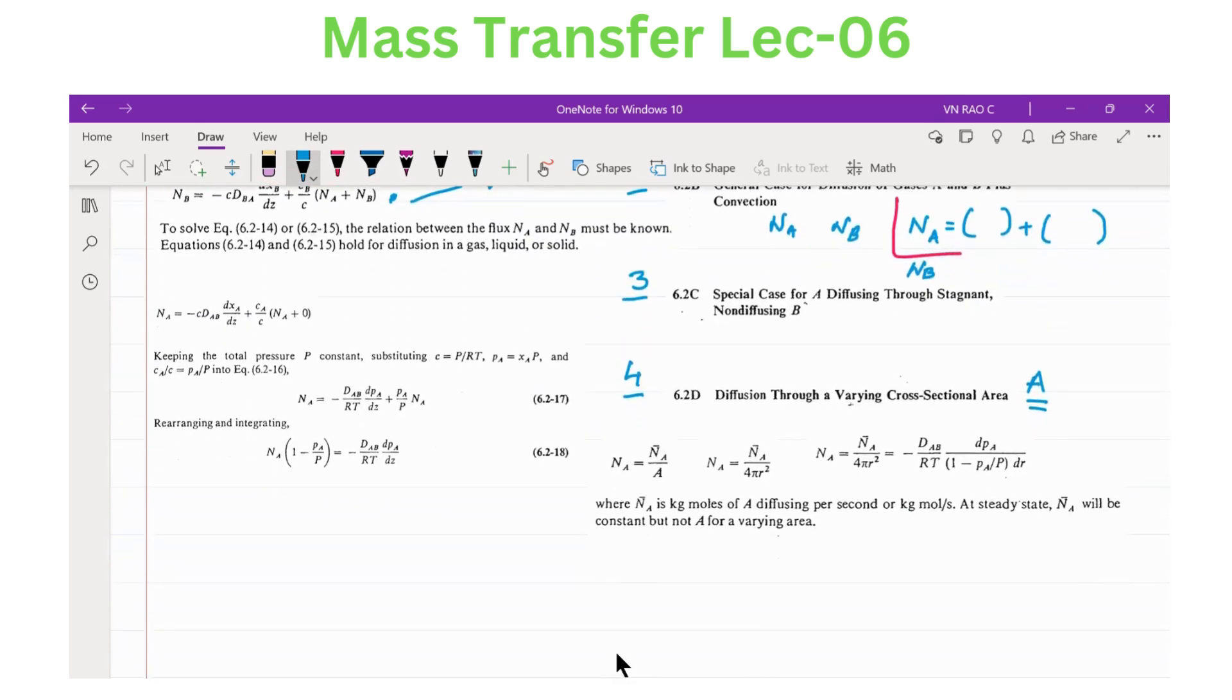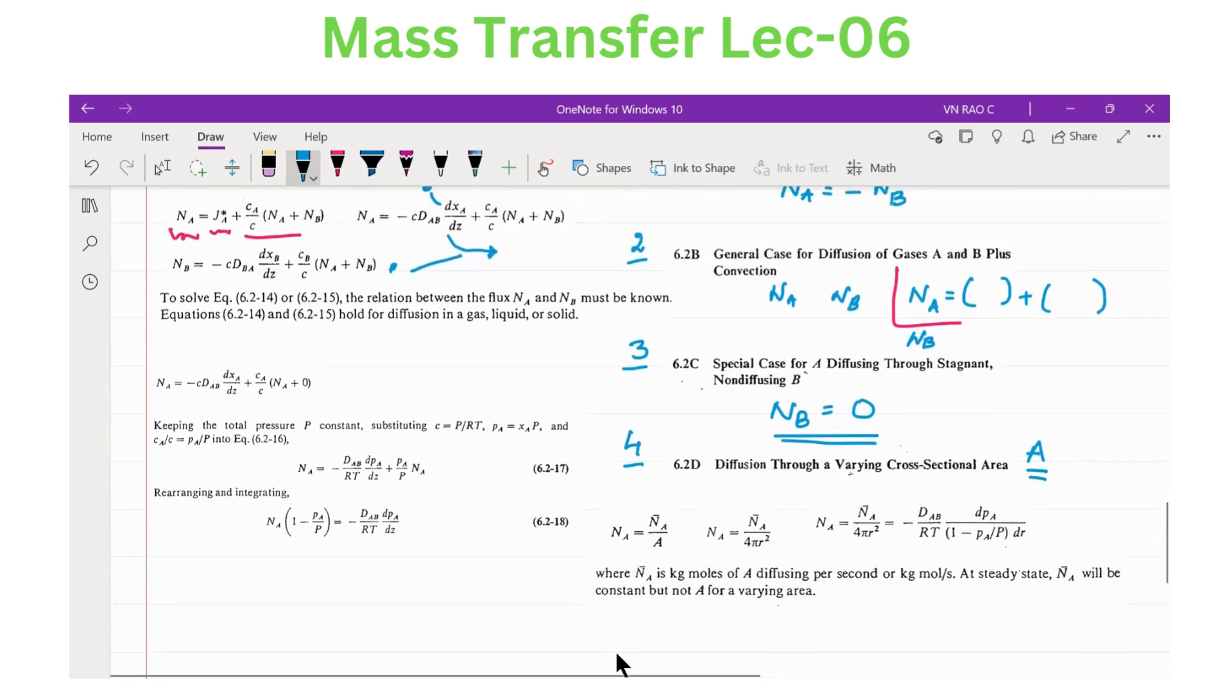The third one, special case for A diffusing through stagnant, non-diffusing. That means here NB is 0. There are quite many examples where we can actually quote this. If you see this equation NA, in the NA equation what we have written, we consider that NB is 0 and then we further deduce the equation accordingly.